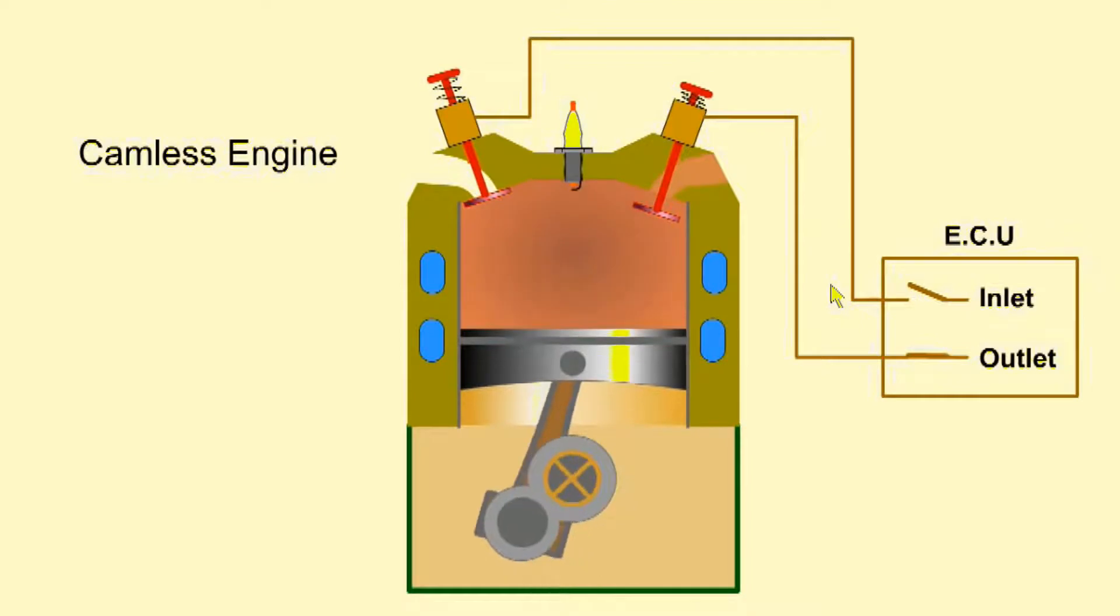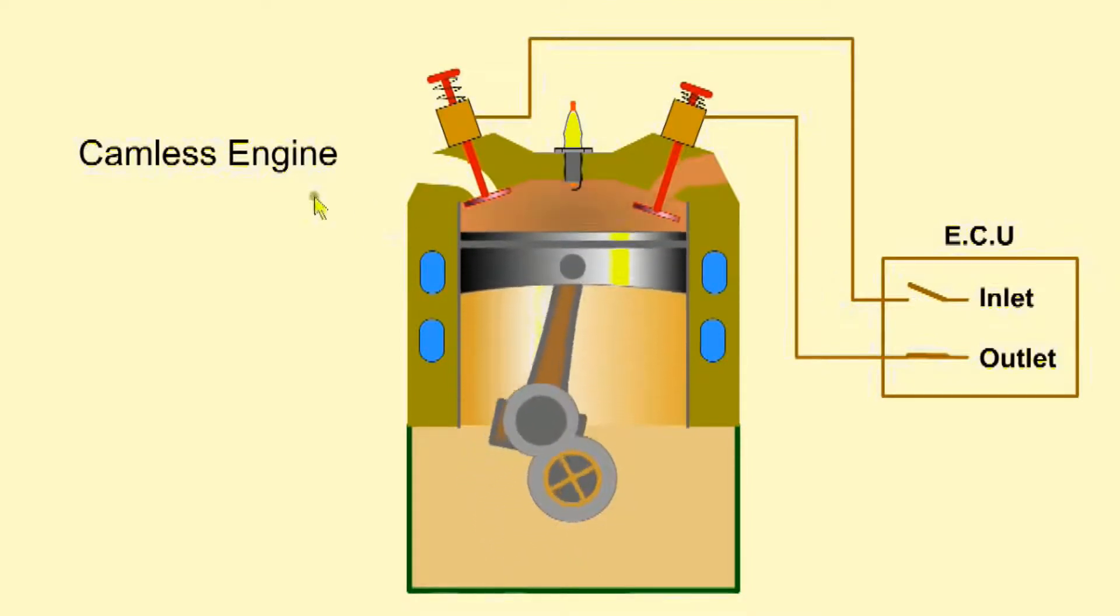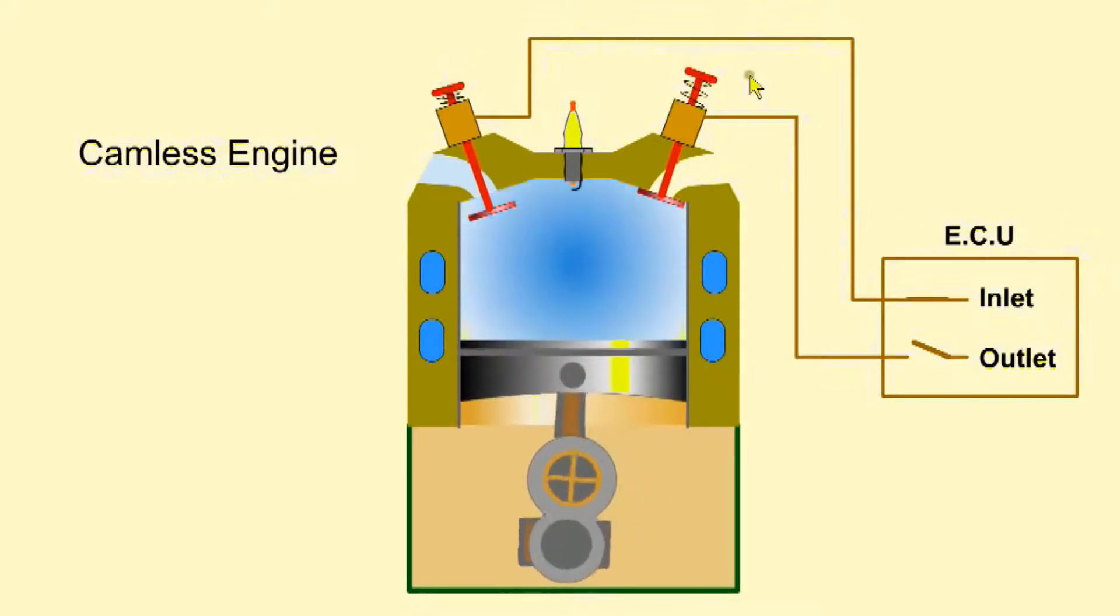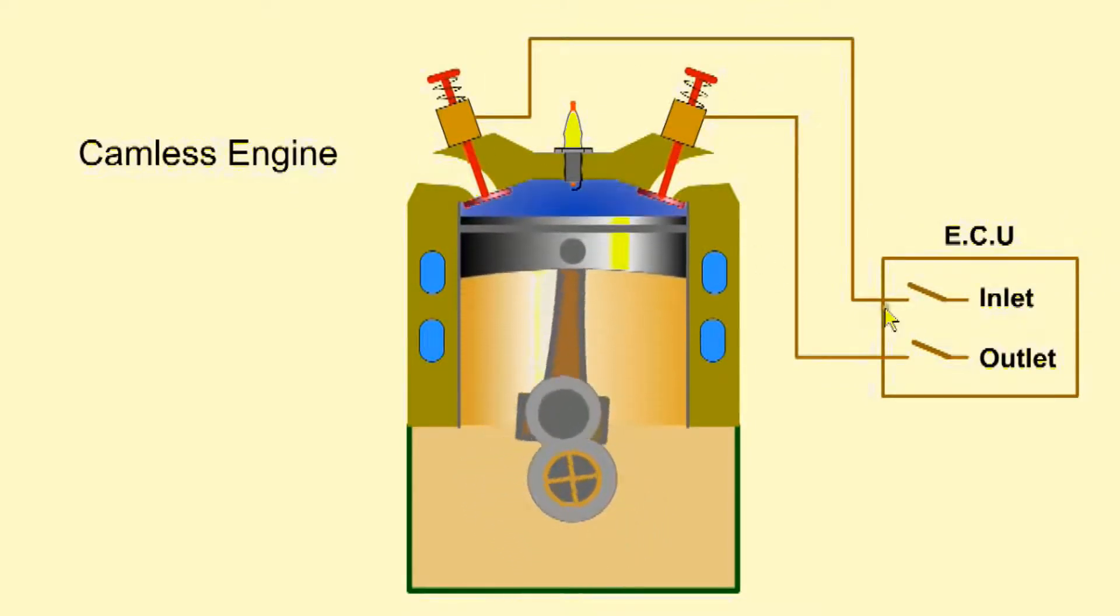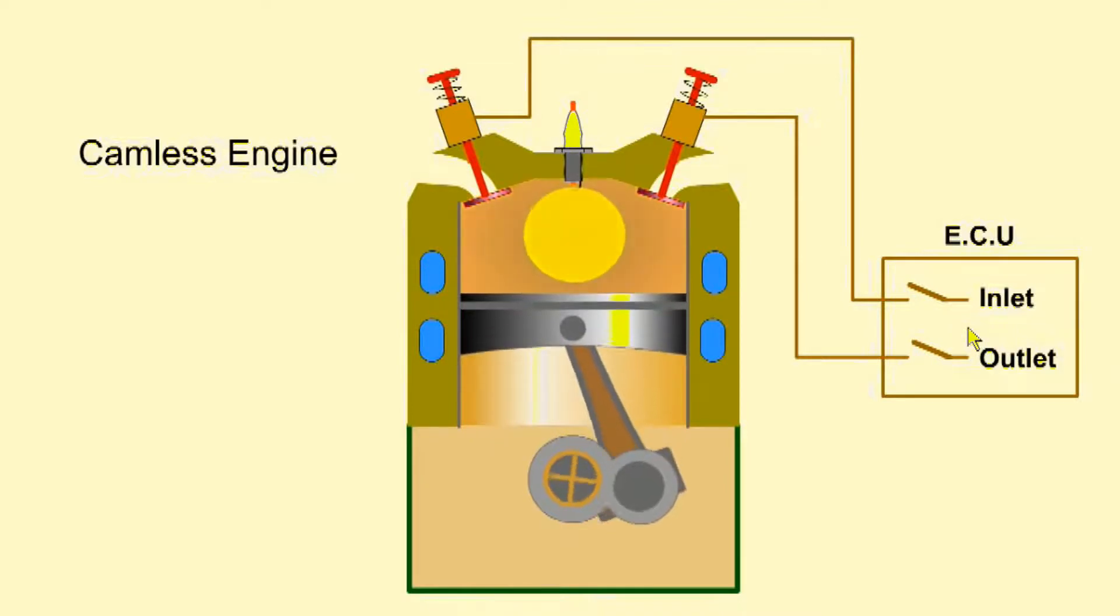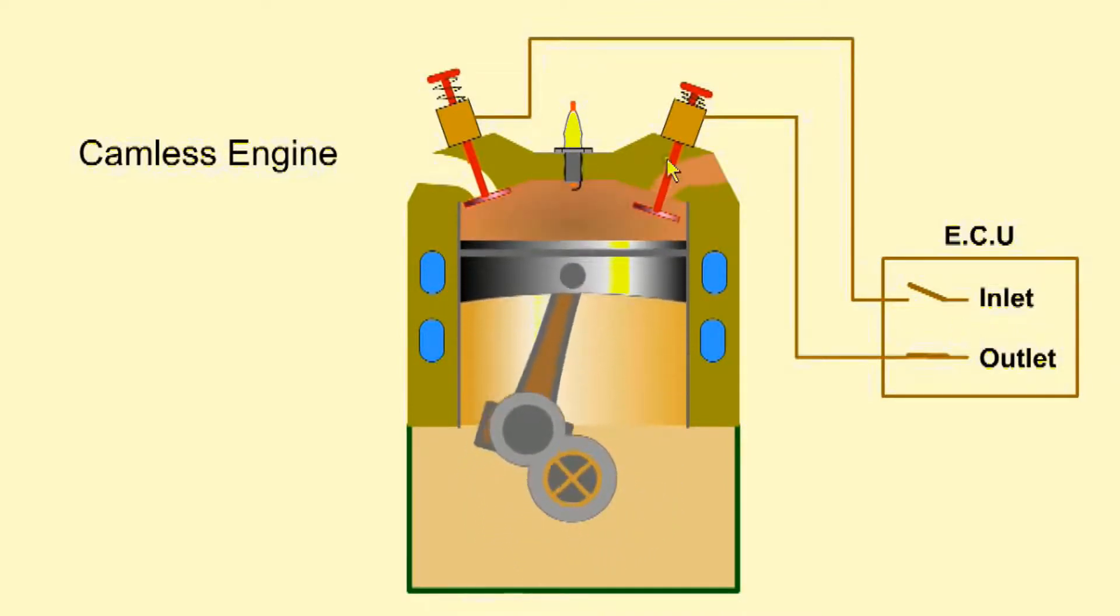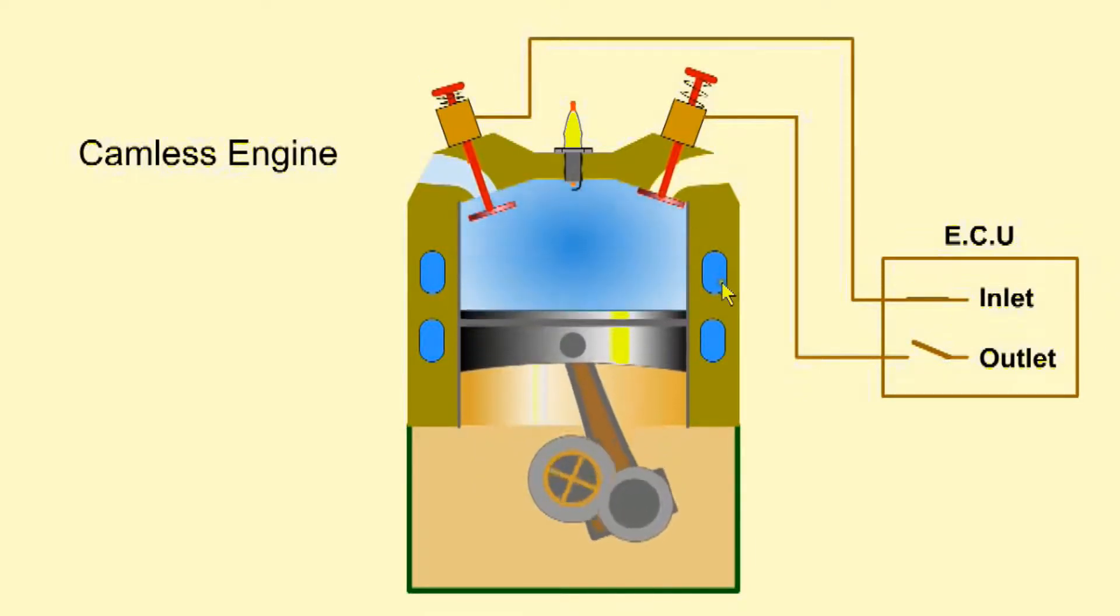A further development with the operation of valves is the camless engine. It does not have a camshaft and relies on electrical solenoids activated by the ECU to operate the valves. This allows immense flexibility with the control of timing and lift of both the inlet and exhaust valves.